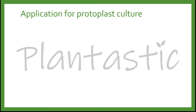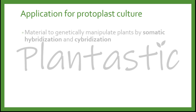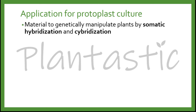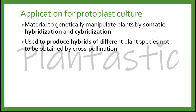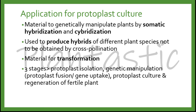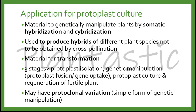Protoplast culture is a great material to genetically manipulate plants by somatic hybridization and cybridization. It can be used to produce hybrids of different plant species which cannot be obtained by cross pollination. It is also a material for transformation. There are three stages: protoplast isolation, genetic manipulation such as protoplast fusion or gene uptake, and protoplast culture followed by regeneration of a fertile plant. It may also have somaclonal variation, which is a simple form of genetic manipulation.